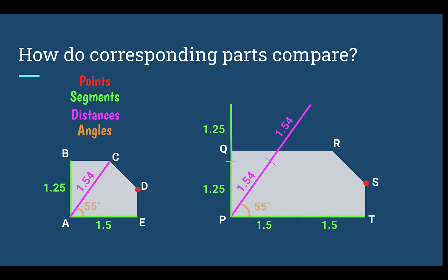When checking our angles, they might appear the same, but it's not a scale copy. When deciding if something is a scale copy, you check segments, distances, and angles. If the segments and distances are not multiplied by the same scale factor each time, it is not a scale copy. And if the angles change at all, it is not a scale copy.